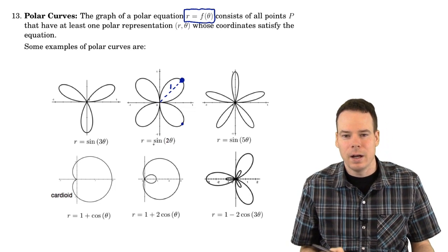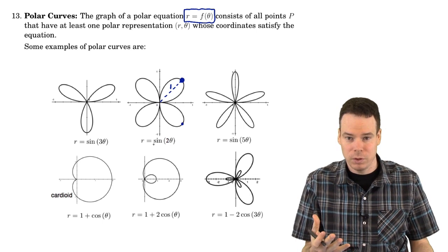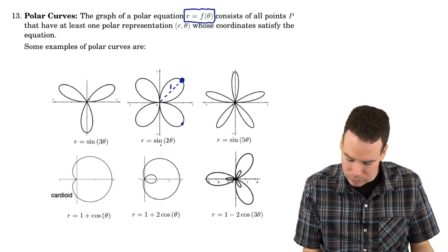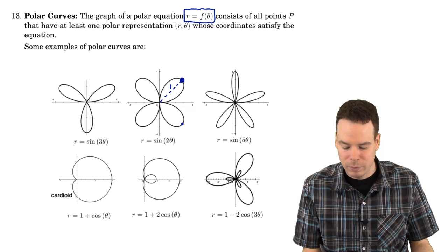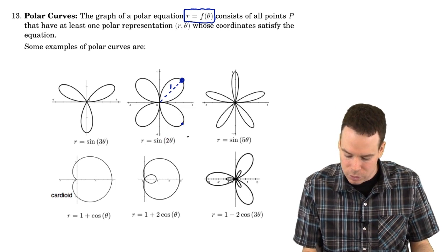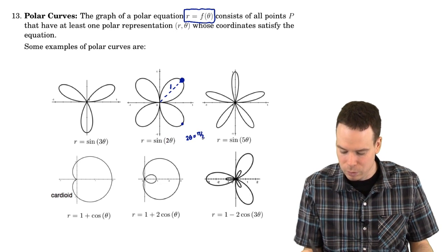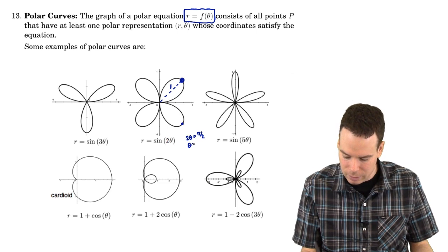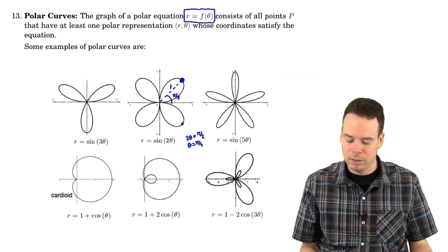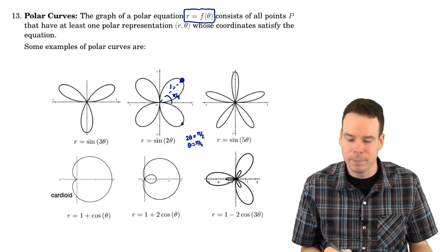Moreover, when does sine of an angle become 1? Well, first it happens when the angle is pi by 2. So when the angle, the thing I'm putting into the sine function is pi by 2, sine of it will be 1. So when is 2 theta equal to pi by 2? Oh, that's when theta is pi by 4. Oh, so I know that that's got to be pi by 4 then. Because if I plug pi by 4 into this expression, I get sine of pi by 2 which is 1. So I get that.